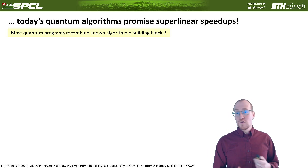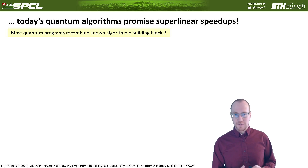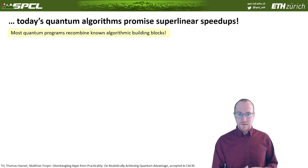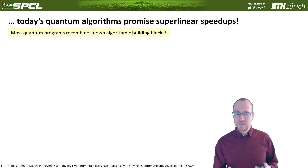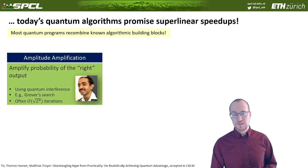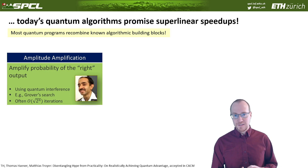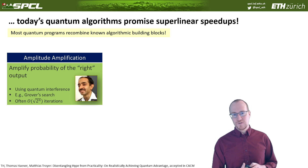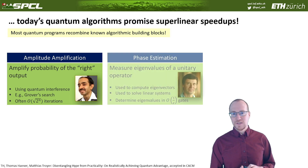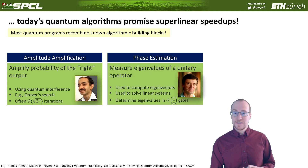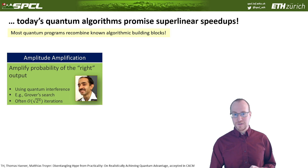But actually, most quantum programs recombine known algorithmic building blocks. In fact, many people say — including me — that there are only nine or ten different fundamental quantum algorithms, and everything else is just a recombination of those. The most famous and most applicable one is amplitude amplification in the context of Grover's algorithm. The idea is that you can invert any function using quantum interference with square root n iterations, instead of n iterations where you'd need to look through all possible evaluations of that function.